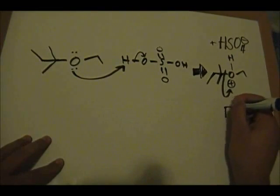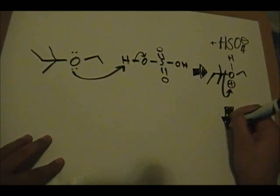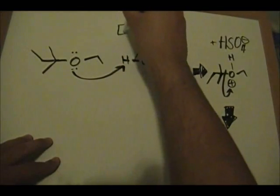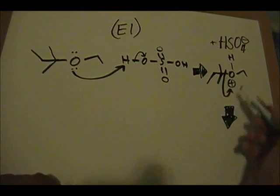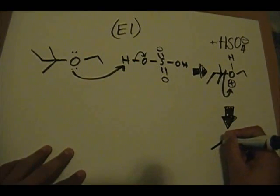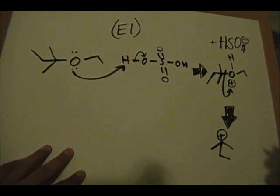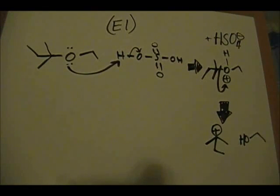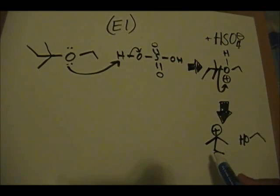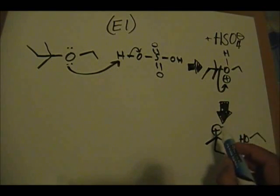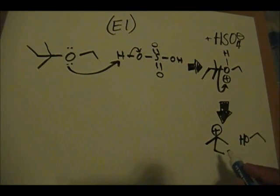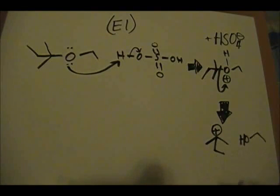What you form as a product of this step — this is an E1 elimination. You form your carbocation intermediate, with a positive charge on this carbon, and you have your alcohol. Now you have to look out for rearrangements. We have formed the most substituted carbocation intermediate — a tertiary carbocation — so there won't be any rearrangements in this case.